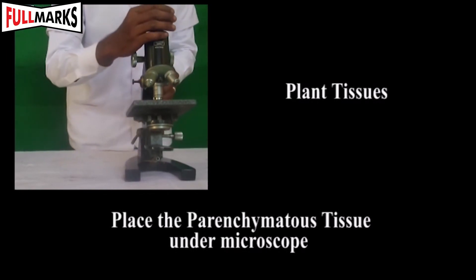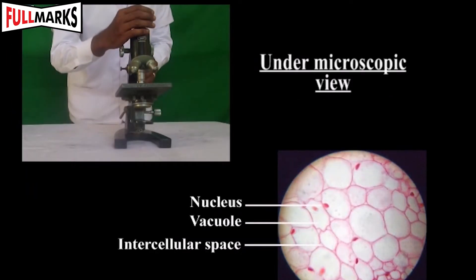Parenchymatous tissues: All cells are the same in size and length. Corners of cells show intercellular spaces. Each cell shows a prominent nucleus and a large central vacuole. Each cell has thin cell walls, and intercellular spaces are present between the cells.